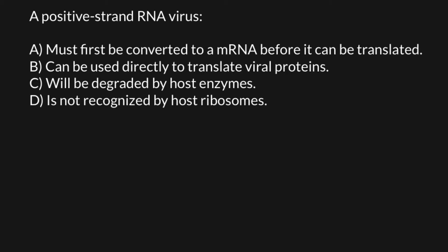As you know, all viruses can be of two kinds — whether they may have nucleic acid which is RNA or DNA. And if a virus has RNA as nucleic acid, then it can be single-stranded or double-stranded. And single-stranded RNA can also be of two kinds — whether this single strand can be plus or minus, positive or negative.